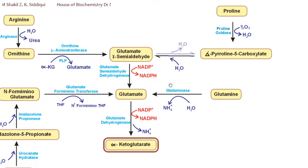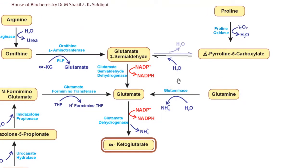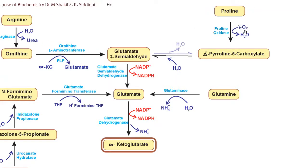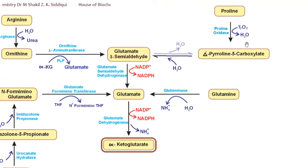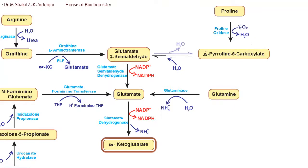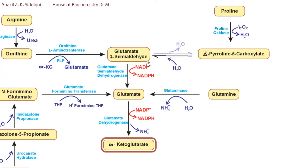Another amino acid that gives us glutamate gamma semi-aldehyde is proline. Proline is broken down into glutamate gamma semi-aldehyde by the enzyme proline oxidase. A question can be asked: which enzyme cleaves proline?